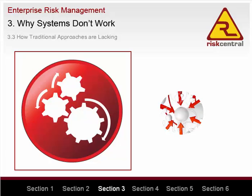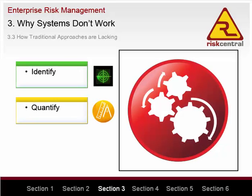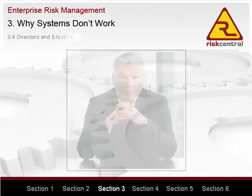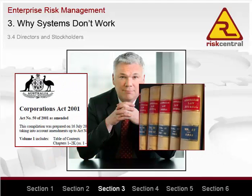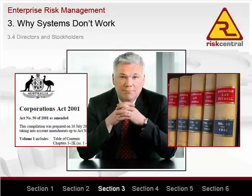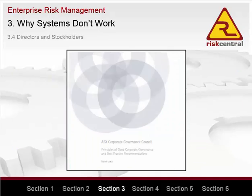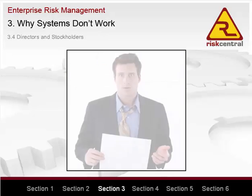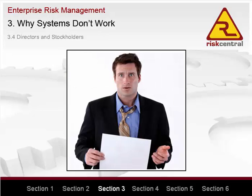This high-level systematic process, which identifies, quantifies and controls significant risks, is therefore an essential part of every effective ERM system. Directors have a legal requirement to demand effective risk management systems that manage organisational risks and keep the directors informed. However, most large organisations could not accurately tell their directors what their top 10 risks are, let alone demonstrate a systematic and logical process for managing each risk. This is allowed to happen because most directors are not aware of the flaws in the traditional approaches.